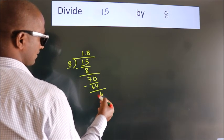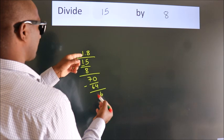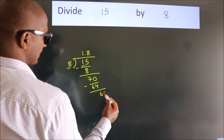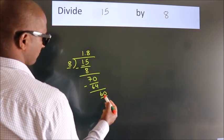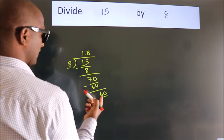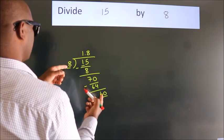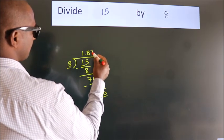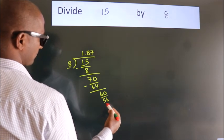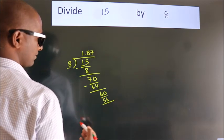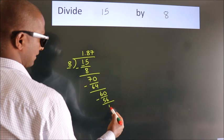After this, we already have the decimal, so directly take 0. So 60. A number close to 60 in the 8 table is 8 times 7, 56. Now we subtract. We get 4.